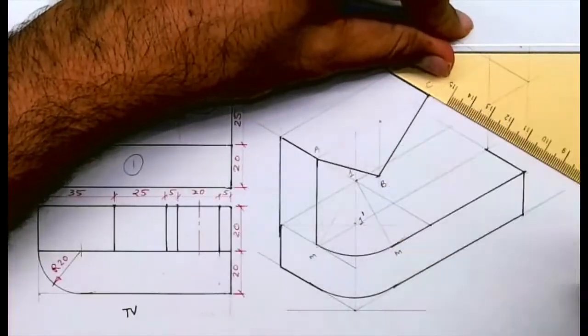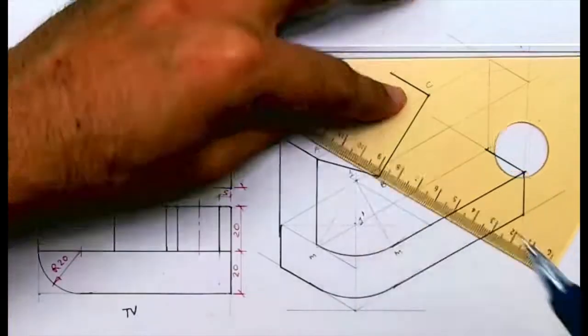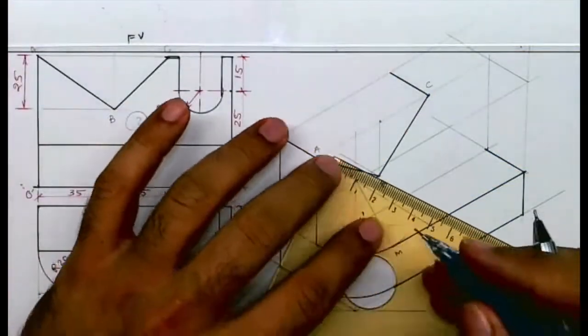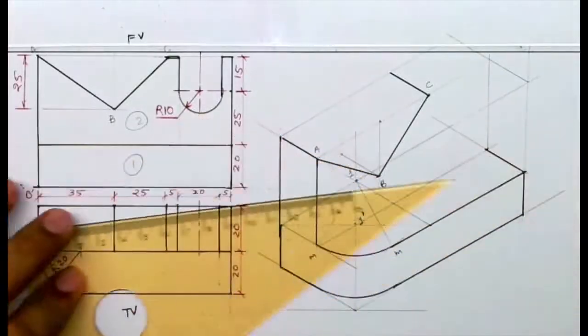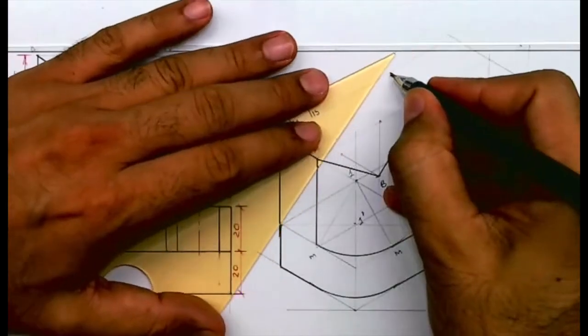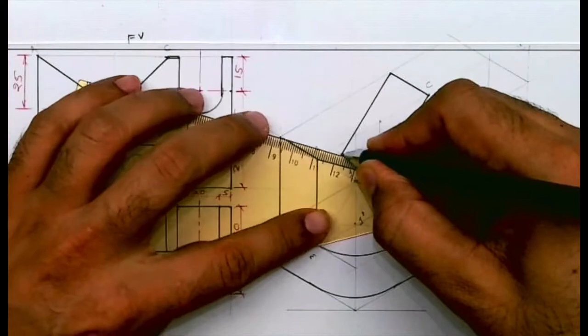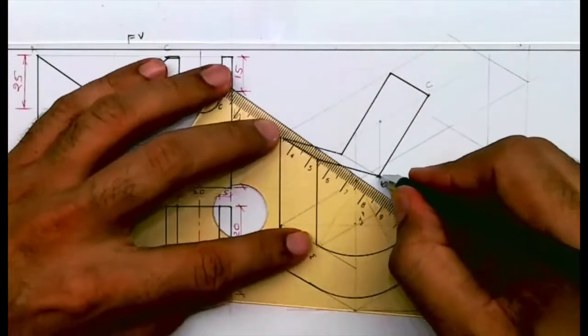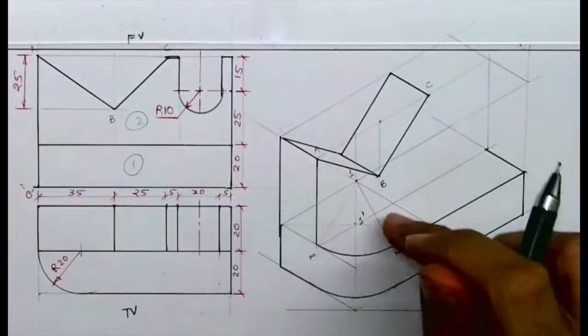You take this line behind by 20, take point B also behind by 20. So we'll get that inclined slope. You go behind by 20 and then you join.